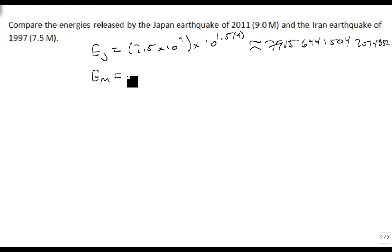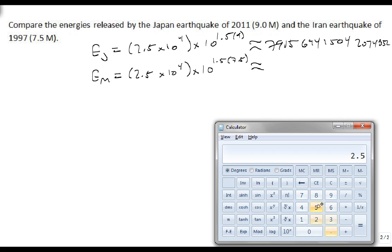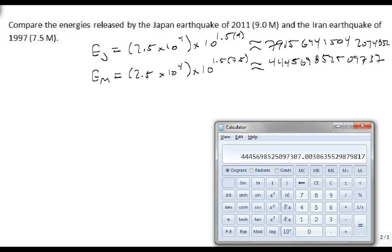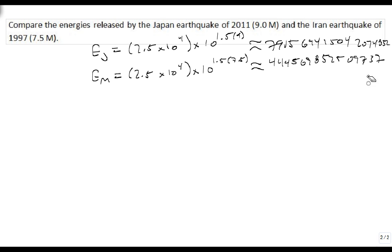Let's look at EM, which is going to be equal to 2.5 times 10 to the 4 times 10 to the 1.5 times 7.5, which is approximately equal to 2.5 times 10 to the 4 times 10 raised to the 11.25, which equals quite a bit smaller number.